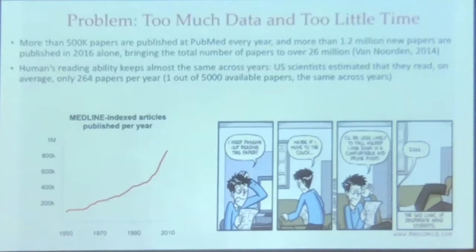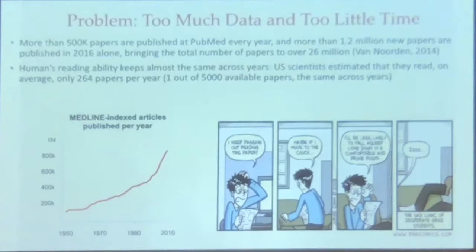This is a much more serious problem in the biomedical domain. Each year — this is just a rough count — more than 1.2 million new papers are published in 2016 alone. And in total there are about 26 million papers. Human reading ability surveys show we can only read at most 264 papers each year — that requires almost reading one paper each day. And this ability is stable. We are not able to catch up with the number of papers — numbers increase almost exponentially, but our ability is always the same.